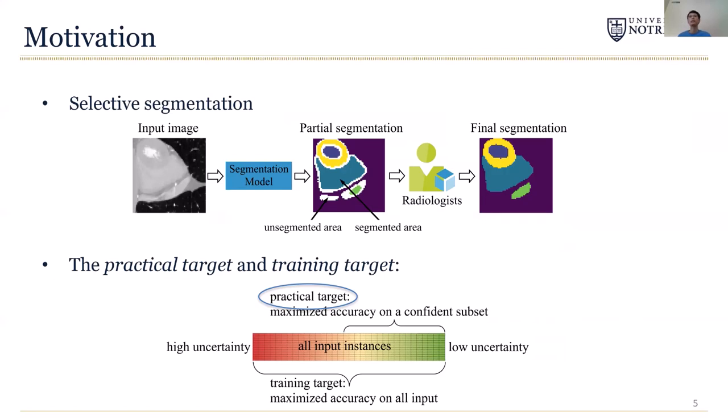Our motivation is that there is a discrepancy between how we train the network and how we use the network. If you look at the figure below, when we train the neural network, the model is trained to optimize the accuracy on all inputs. However, in the case of selective segmentation, only the prediction on the low uncertainty part is used. The prediction on the high uncertainty part will be done by humans. This part will be done by humans anyway, and the error here doesn't really matter.